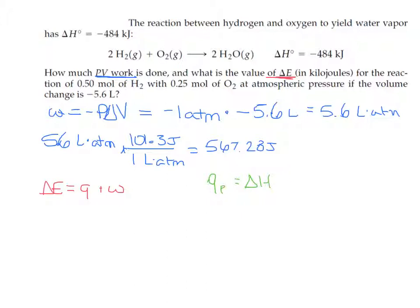Moving forward, I'm going to use the five moles of H2, doing the same thing as last time. For every two moles of H2, negative 484 kilojoules of heat are released. Make sure you put that two in the denominator because that's what the balanced reaction tells you. You should end up with negative 121 kilojoules.